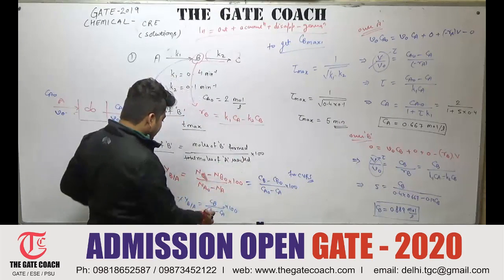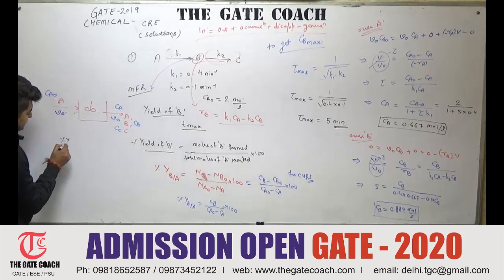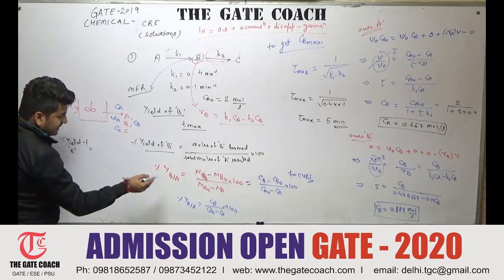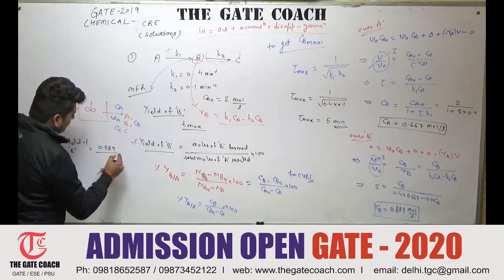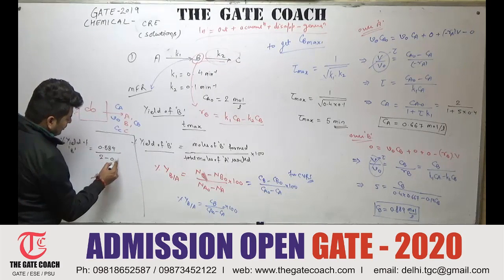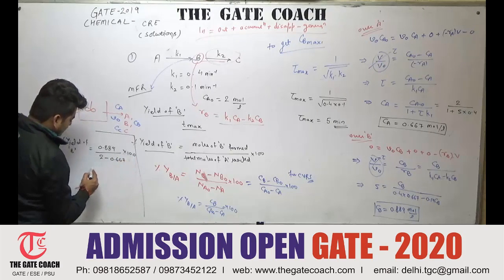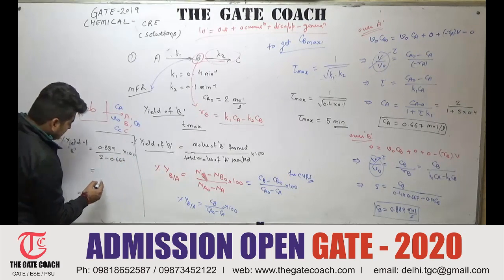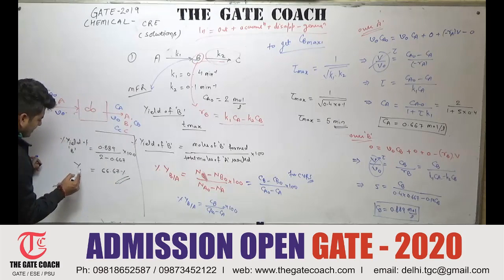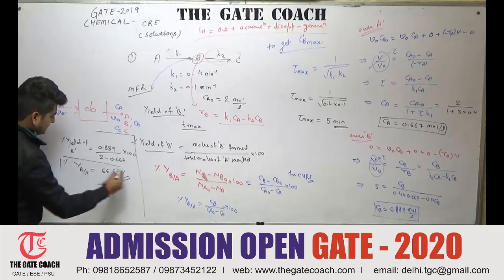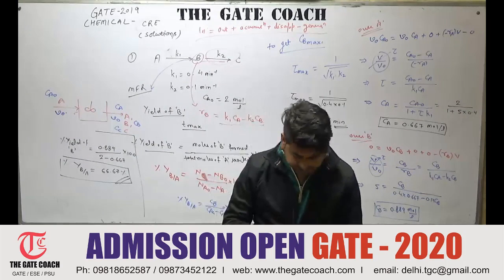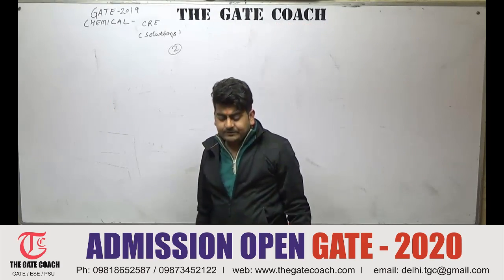Putting these values into the yield expression: percentage yield of B = CB / (CA0 − CA) × 100 = 0.889 / (2 − 0.667) × 100 = 0.889 / 1.333 × 100 ≈ 66.67%. That is the answer — a very basic, one of the simplest problems.